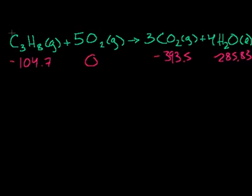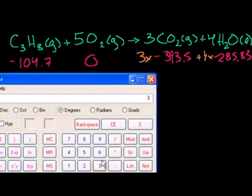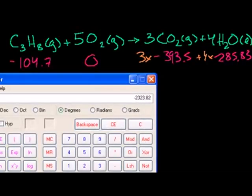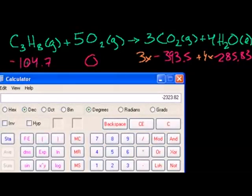So how much heat is produced when we combust one mole of propane? We take the heats of formation of products: 3 times minus 393.5 for carbon dioxide plus 4 times minus 285.83 for water, which equals about minus 2300 kilojoules. Then we subtract 1 times minus 104.7 for propane — equivalently adding 104.7 — giving approximately minus 2200 kilojoules.